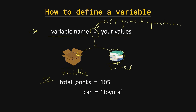Here are some examples of defining variables. For instance, total_books = 105 — here 'total_books' is your variable name, '105' is your value, and the equal sign is your assignment operator.